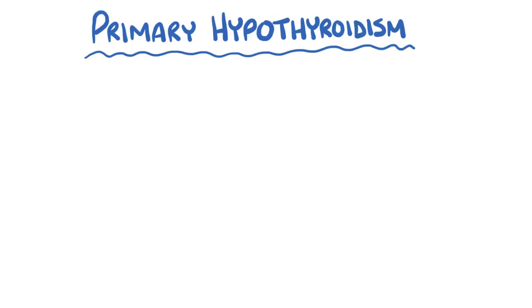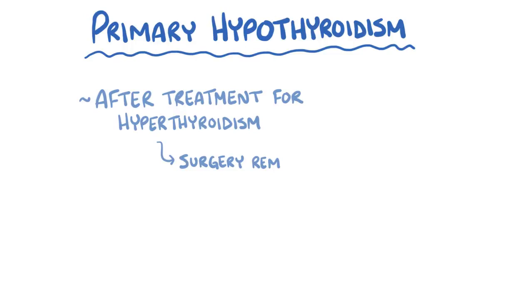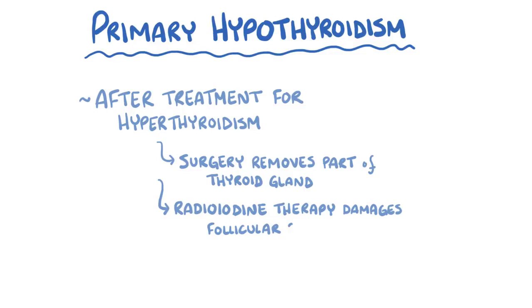Primary hypothyroidism can also happen after treatment for hyperthyroidism, either because surgery removes part or all of the thyroid gland, or because radioiodine therapy damages too many follicular cells.